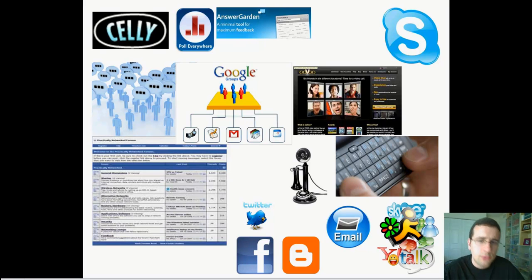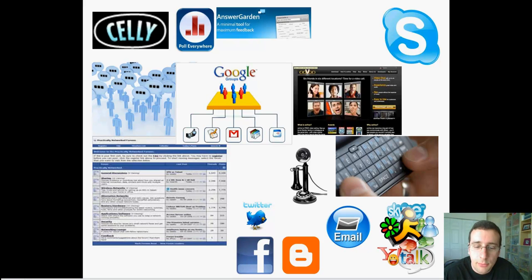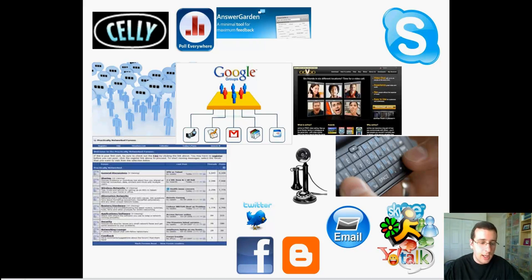The same kind of students who have problems presenting in class and standing in front of everybody — and yes, that is an important skill that kids need to develop — those same students don't have problems putting themselves out there on Twitter and Facebook. Facebook and Twitter are two examples of social networking tools which have changed the way that we interact with the world.